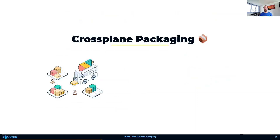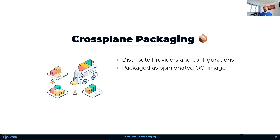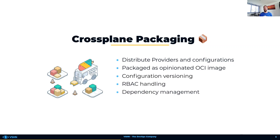The last important feature are the Crossplane packages. With them, provider installation and configuration, as well as custom infrastructures, can be easily distributed and shared. These packages are OCI-compliant images which contain just a bunch of Crossplane YAML, and can therefore be hosted on any OCI-compliant registry. Crossplane packages allow for configuration versioning, RBAC handling, and dependency management. Packaging can be done manually, but much better via the Crossplane CLI.